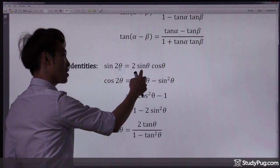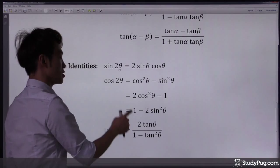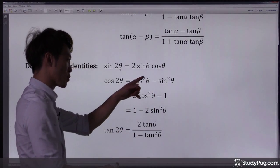Sine 2 theta, we have this formula. Cosine 2 theta, we have this formula.